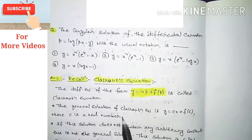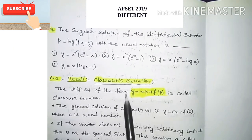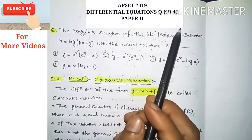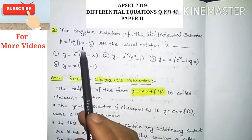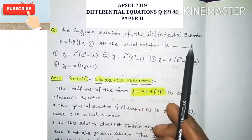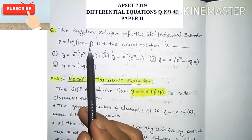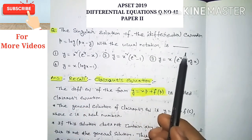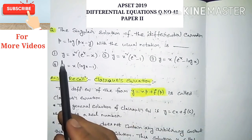Hi everyone, this is Ram Krishna, welcome to my channel. In this video I'm going to discuss the 2019 differential equations question number 41 from Paper 2. The question is: the singular solution of the differential equation p equals log of (px minus y), with the usual notations, is dash — and there are four options.